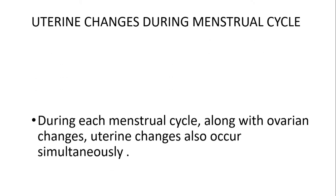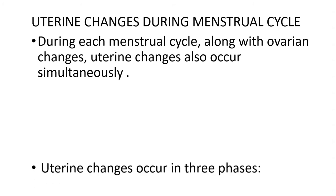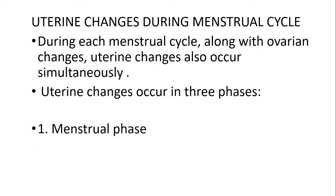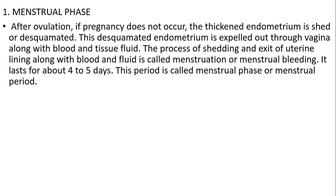Uterine changes during the menstrual cycle occur simultaneously with ovarian changes. Uterine changes occur in three phases: the menstrual phase, the proliferative phase, and the secretory phase. In the menstrual phase, after ovulation, if pregnancy does not occur, the thickened endometrium sheds or desquamates. This desquamated endometrium expels out through the vagina along with blood and tissue fluid. The process of shedding the exfoliated uterine lining with blood and fluid is called menstruation or menstrual bleeding. It lasts for four to five days.